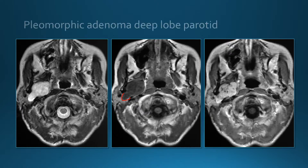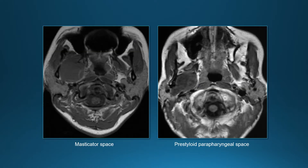This lesion is a pleomorphic adenoma of the deep lobe of the parotid. To contrast a masticator space lesion from a pre-styloid parapharyngeal space lesion: the masticator space lesion displaces the parapharyngeal fat both posteriorly and medially, whereas the pre-styloid parapharyngeal space lesion displaces the parapharyngeal fat medially only.